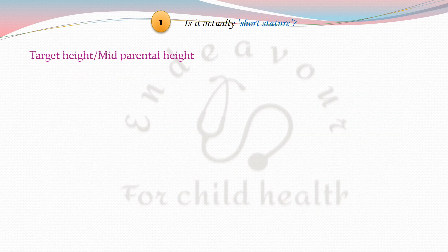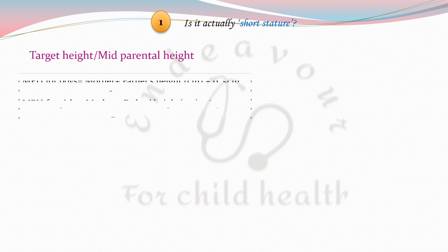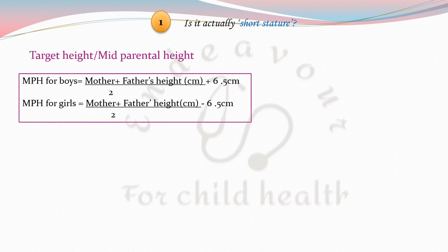The third parameter is the target height or mid-parental height, calculated by the formula: for boys it is mother's plus father's height in centimetres divided by 2, plus 6.5 centimetres; and for girls it is minus 6.5 centimetres.